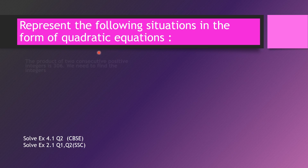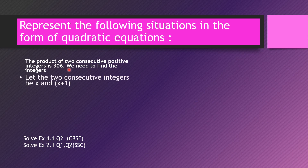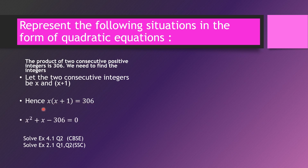Now let's represent situations as quadratic equations. If the product of two consecutive positive integers is 306: consecutive integers differ by one, so let them be x and x plus 1. Their product gives x(x plus 1) equals 306, which expands to x squared plus x minus 306 equals 0.